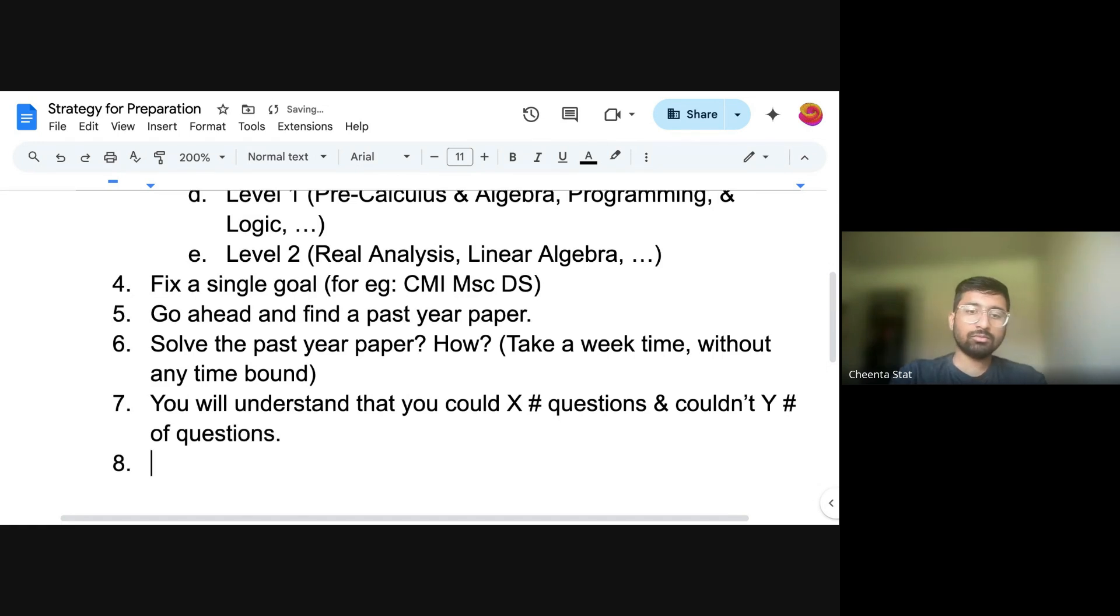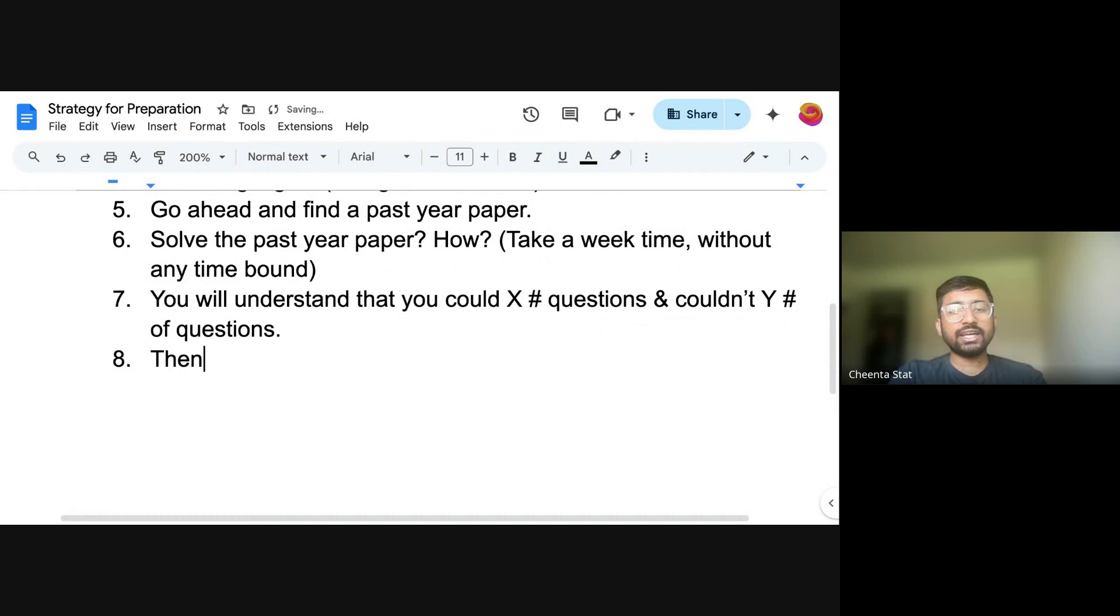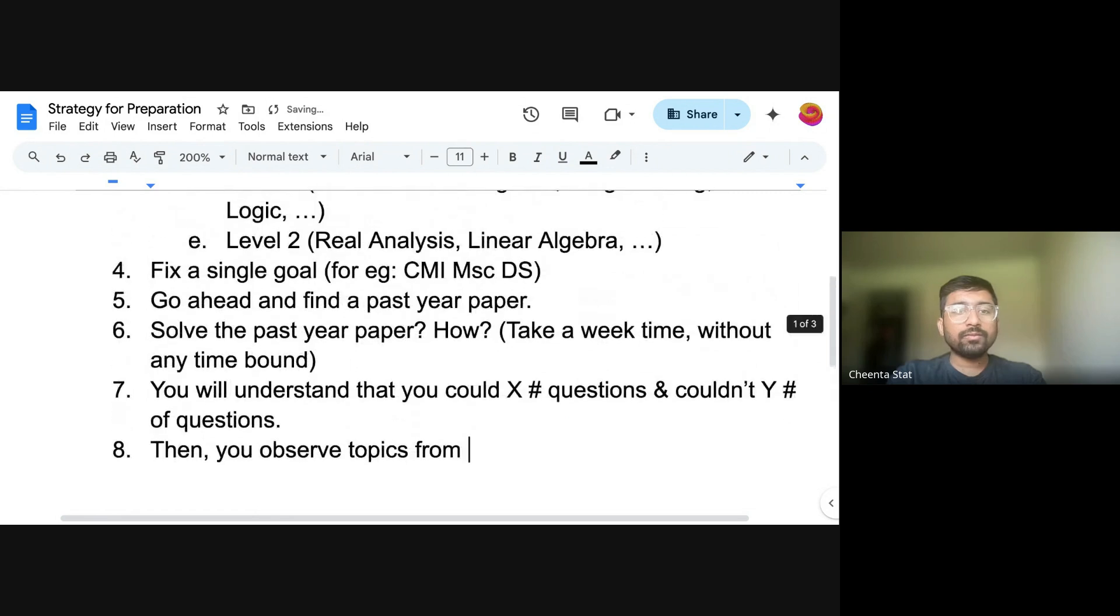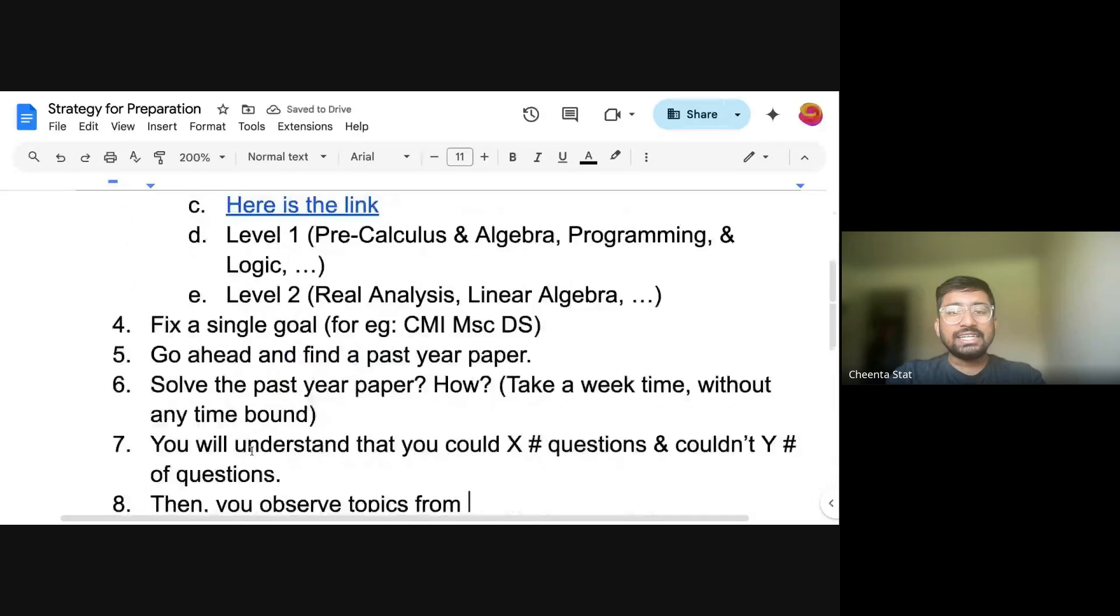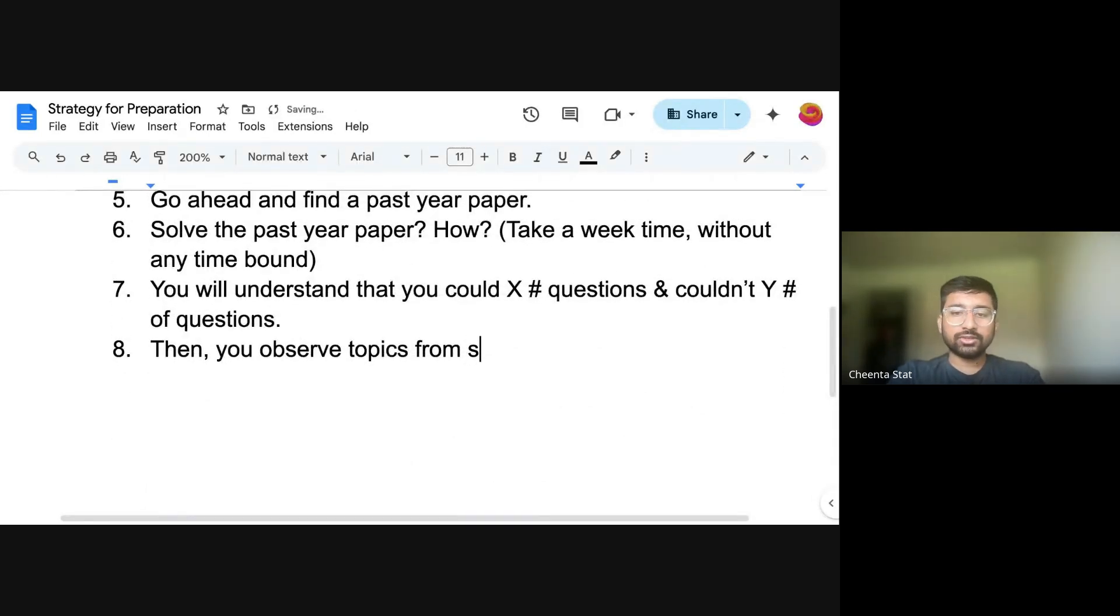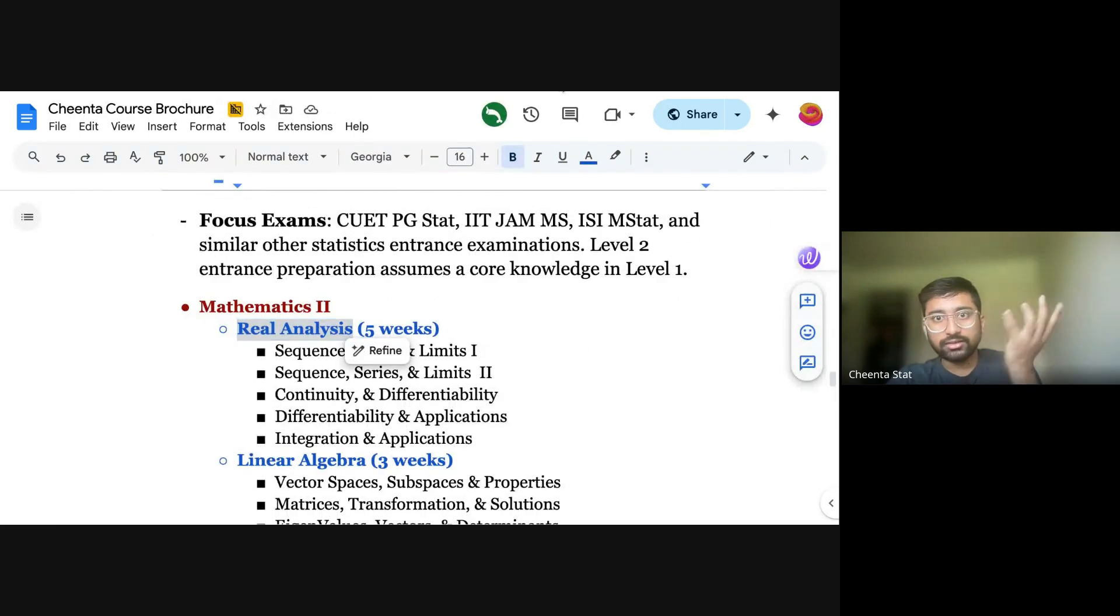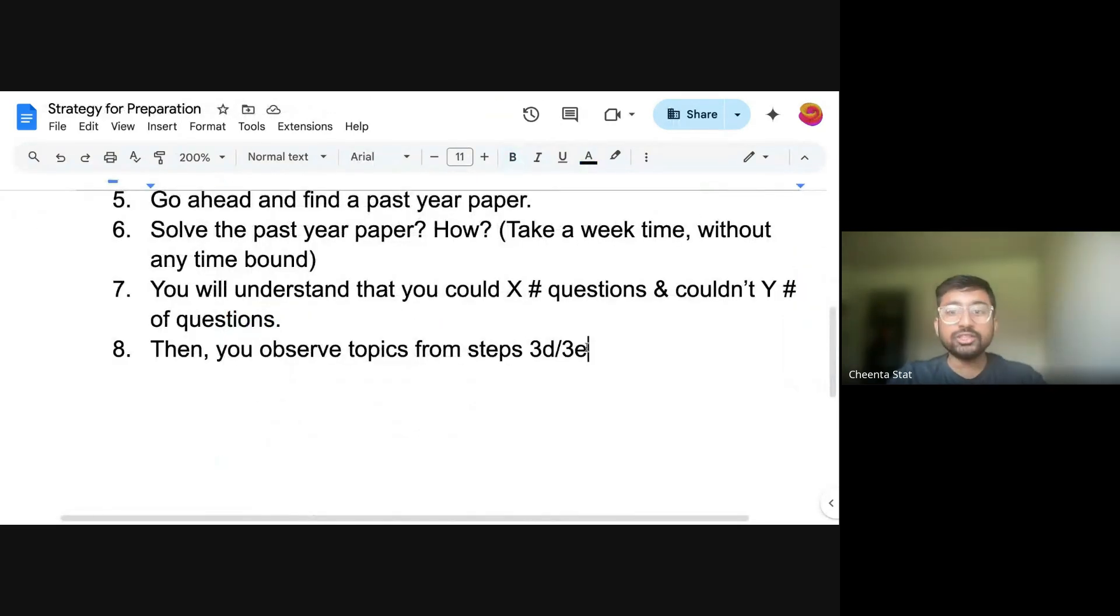And could not solve Y number of questions. Then what do you do? Then you check, then you observe which of those, observe the topics from 3D and 3E, from steps 3D or 3E, the topics that you have checked out from here. You observe which topics you are good at and not good at, from this X and Y number of questions. That will give you strength and weaknesses.